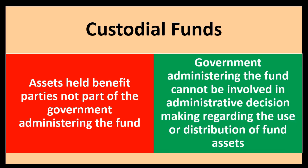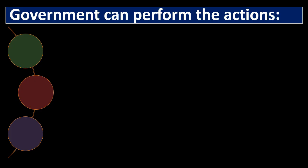The government administering the fund cannot be involved in administrative decision making regarding the use or distribution of fund assets. The government administrating the fund is essentially tracking the accounting of the fund. In the custodial fund fiduciary type, the administrating government cannot make decisions about how those assets are used or distributed.